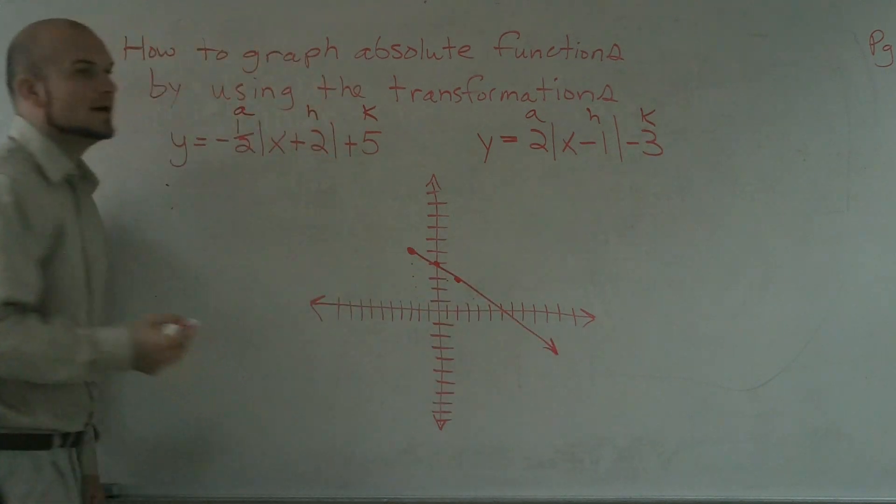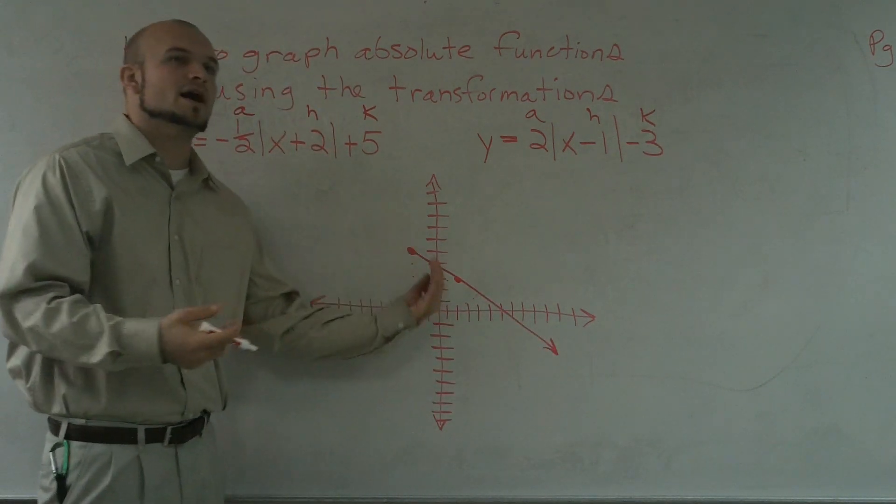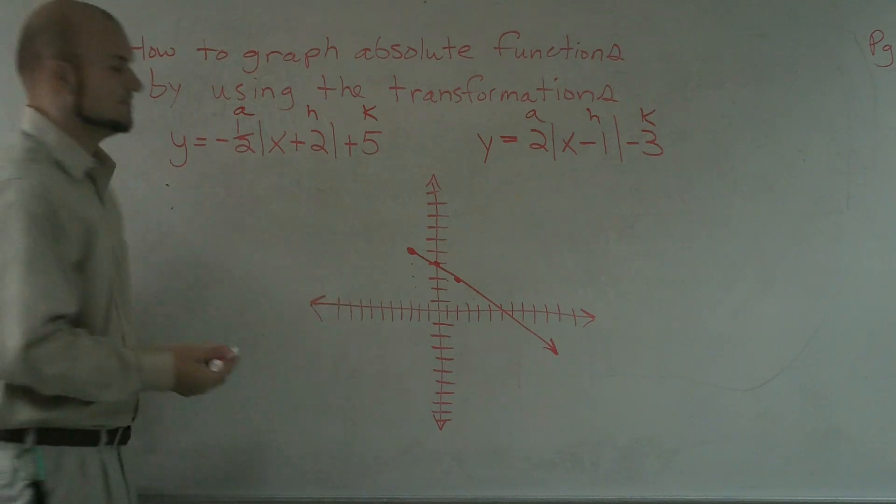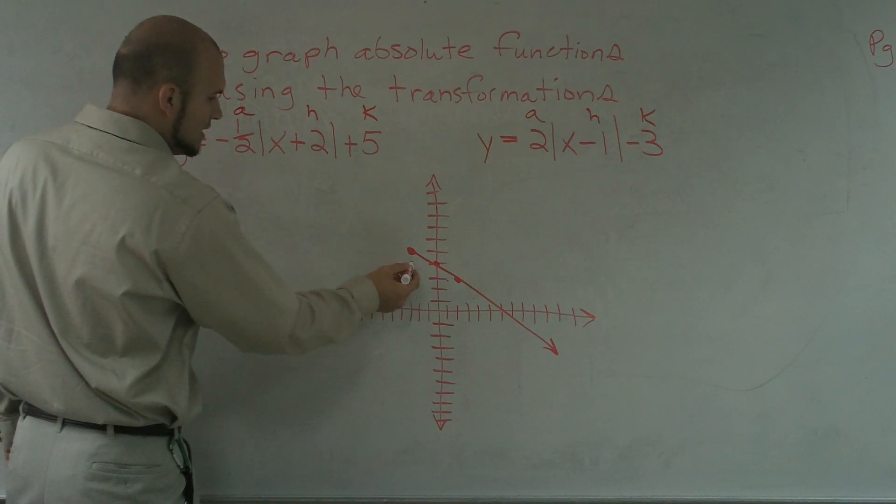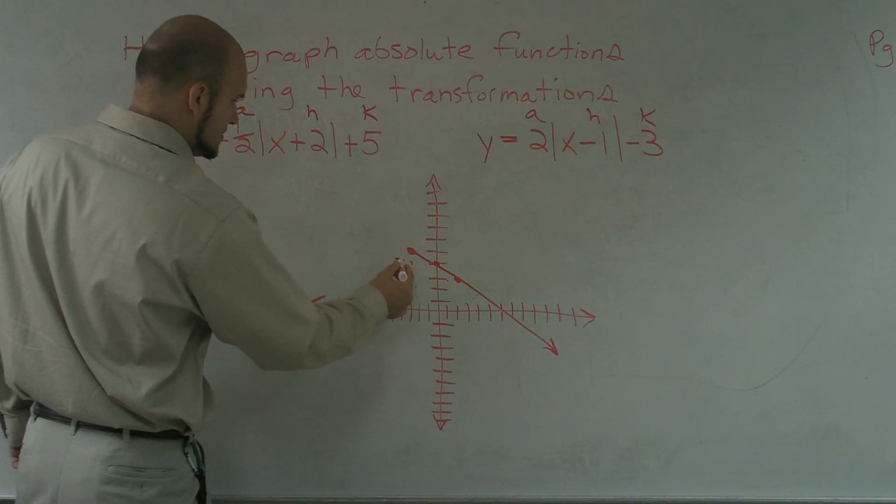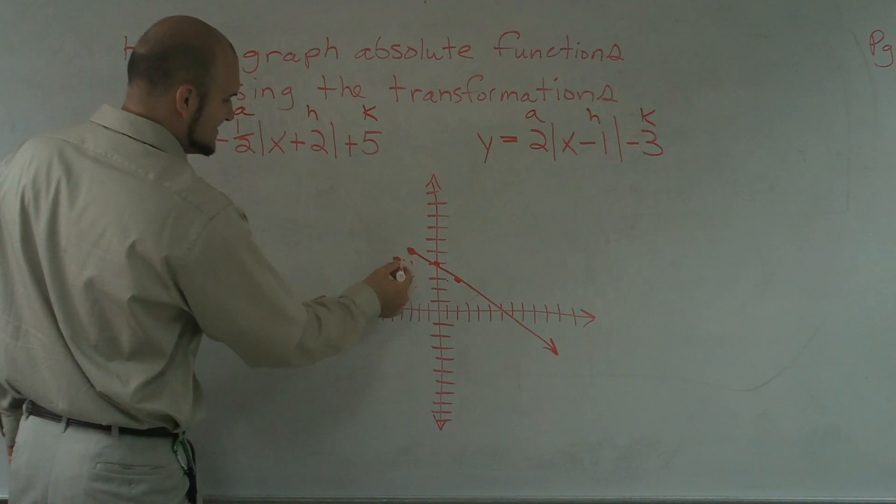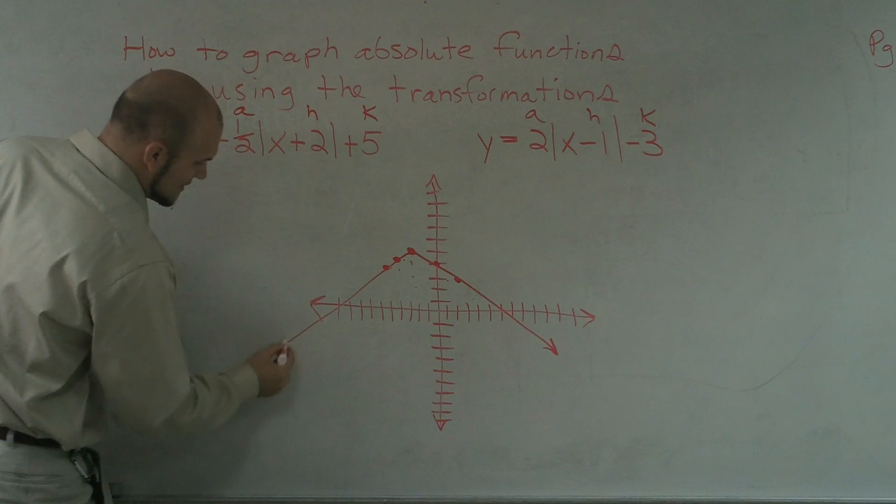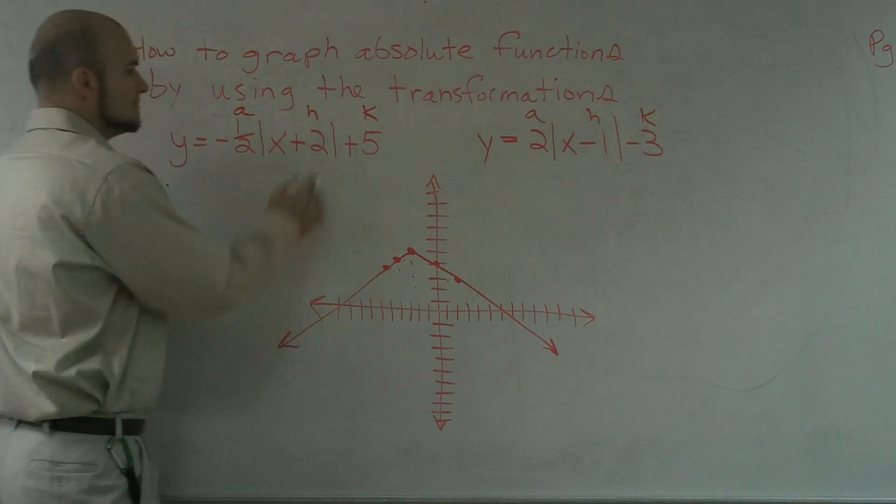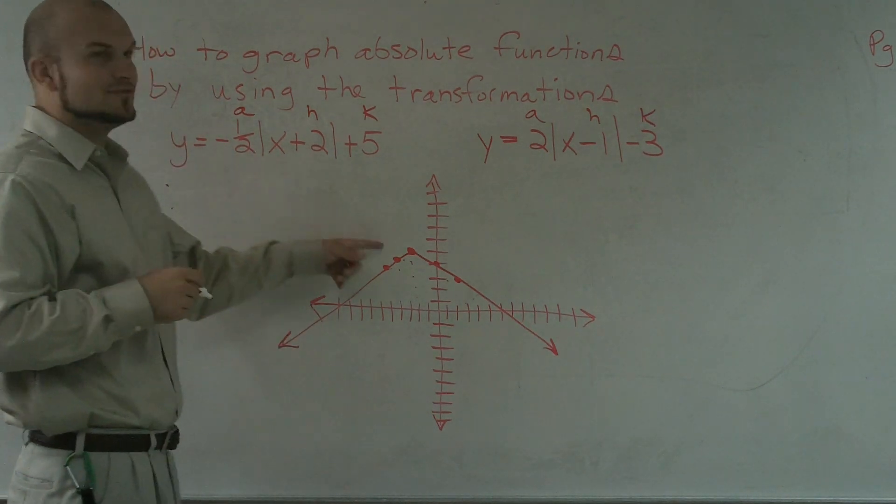And the one property we know about absolute value functions is it's a mirror on one side to the other side. So, again, I'm going to go down 1 to the right 2. So, to the left 2. Then down 1 to the left 2 as well. And go ahead and graph that. So, that is my first equation.